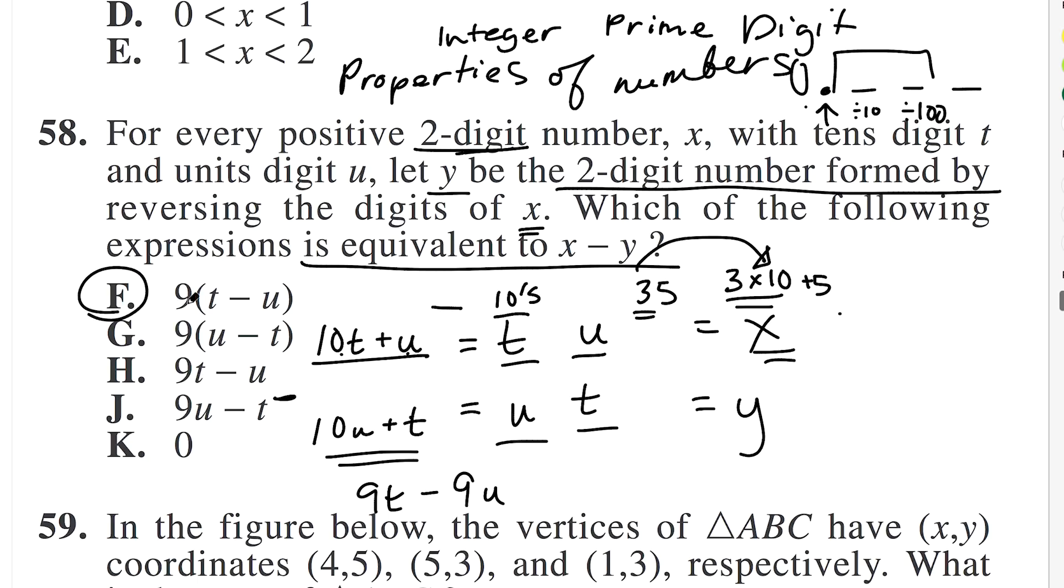And then we just subtract our algebra that we came up with. And I get 9t, because this minus this, and then u minus 10u is negative 9u. So 9t minus 9u. And so there it is, t minus u. It's just factored up here. But you can see it's really easy if we can kind of get to this point where we recognize how do we shift from the idea of digits to the idea of numbers. It's not impossible, but there you have it. That's all I'm going to go through for right now.